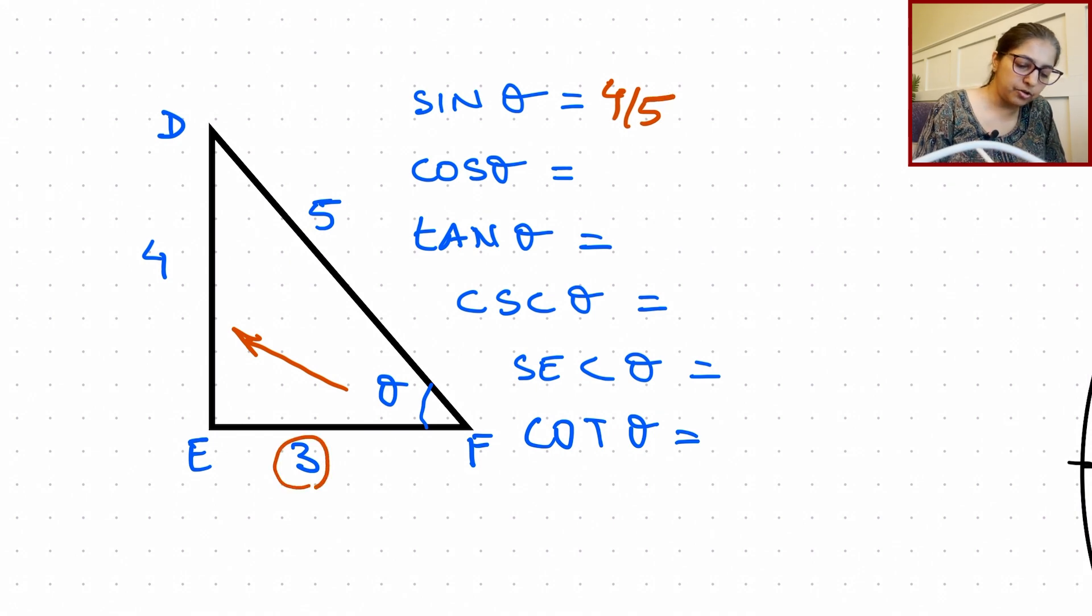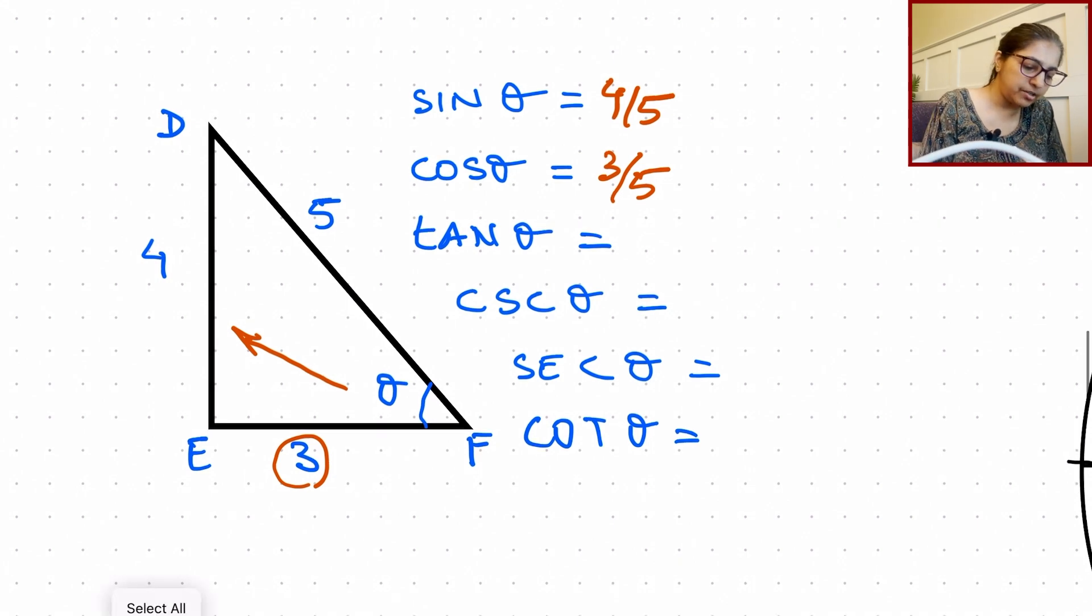What is cosine? The adjacent is going to be 3, so adjacent over the hypotenuse, it is going to be 3 over 5, right? What is tangent of theta? Again, that is going to be opposite over adjacent, which is going to be 4 over 3.